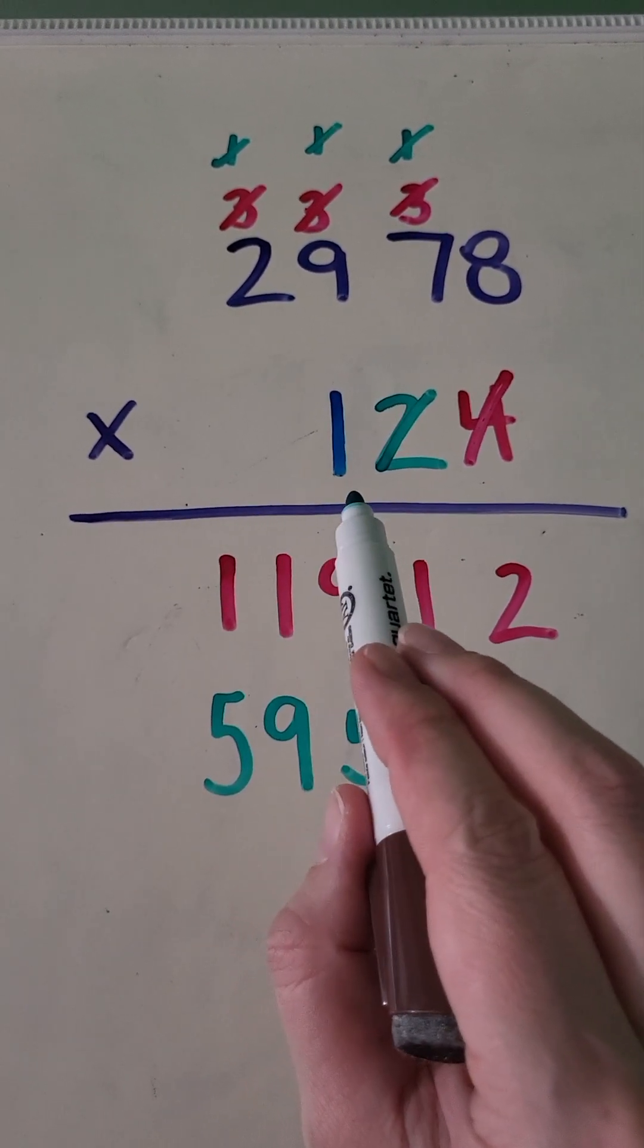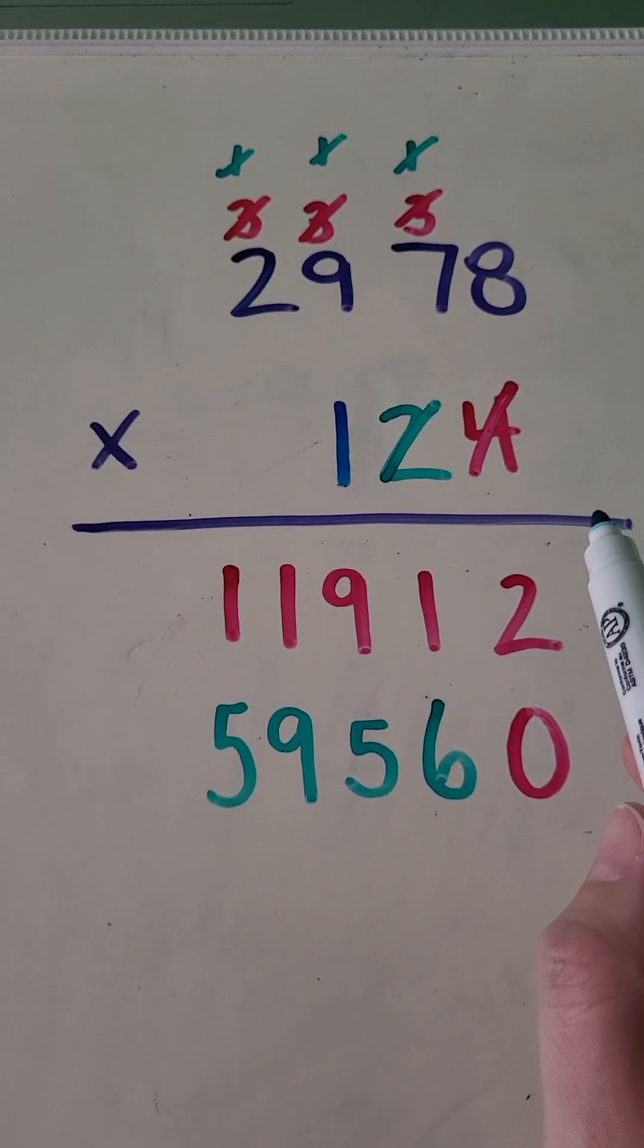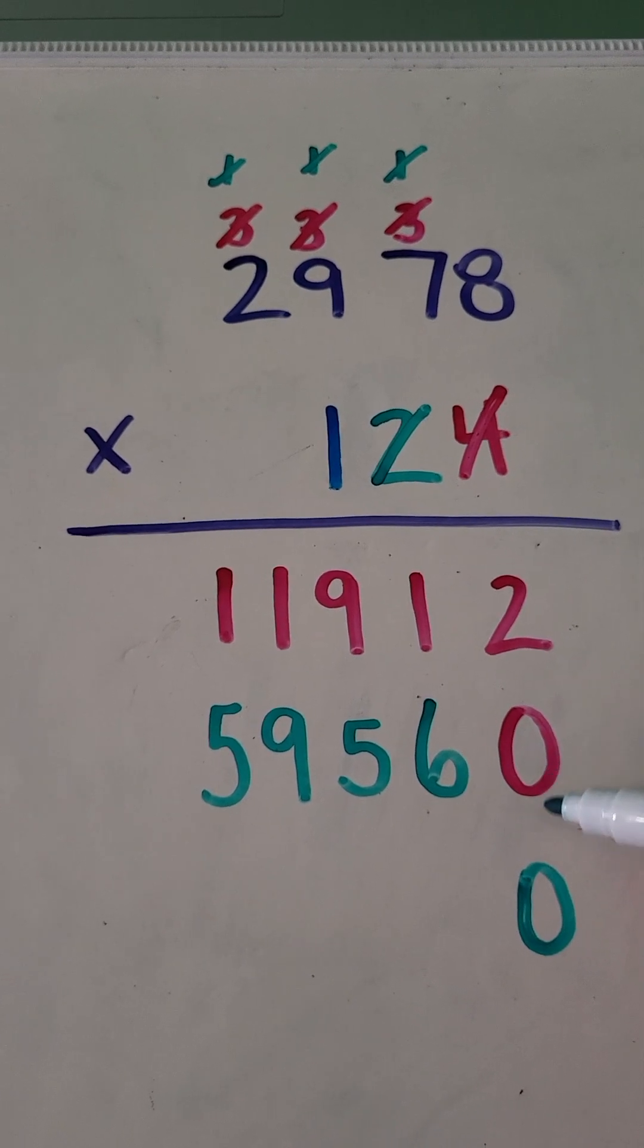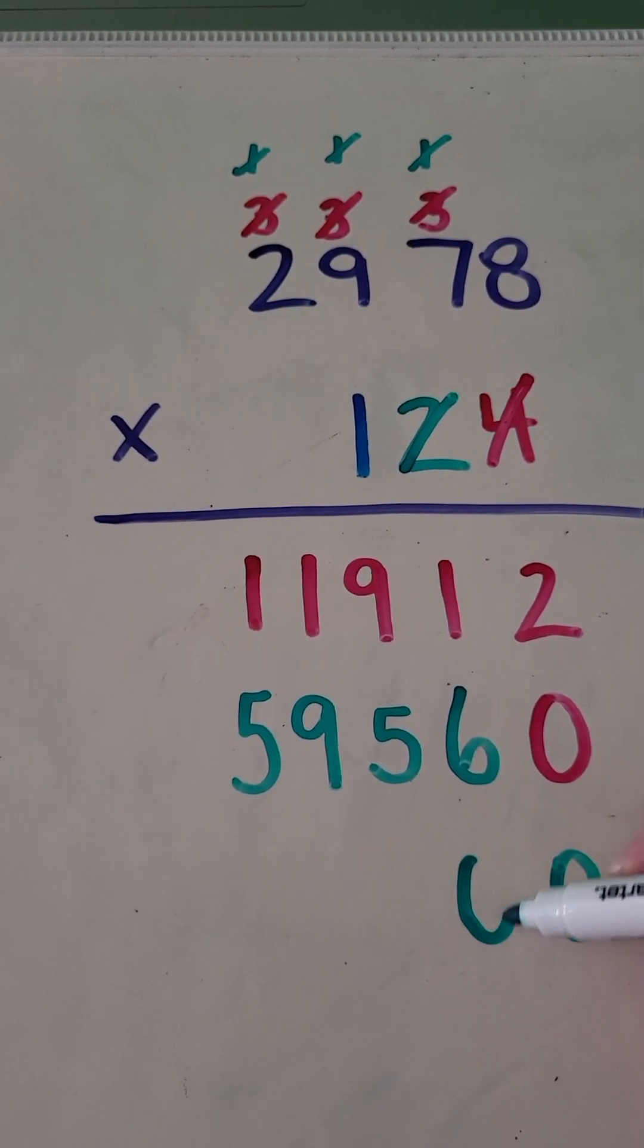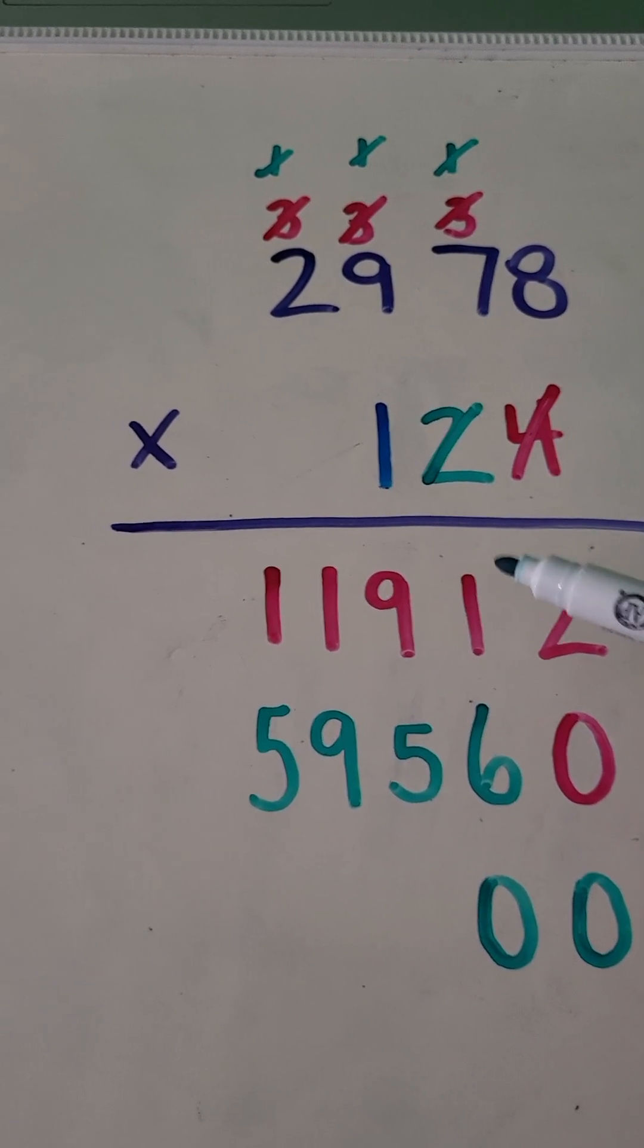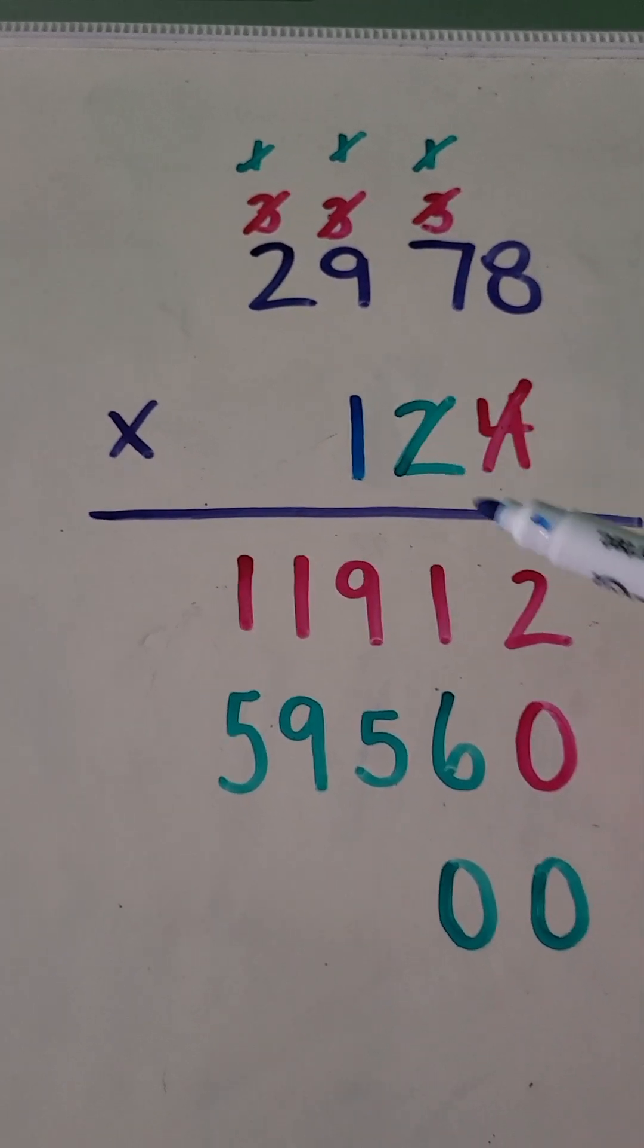And we're making sure we stay organized. So we added a zero the last time to show, okay, now I'm moving on with the number in the tens place. So now because I'm going to do the number in the hundreds place, I'm just going to add two zeros this time. So here's to show that I was doing the number in the tens place. And now here's to show that I'm doing the number in the hundreds place. So coming back over here, I'm going to change colors again.